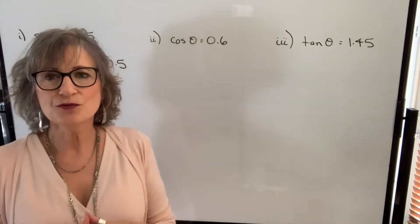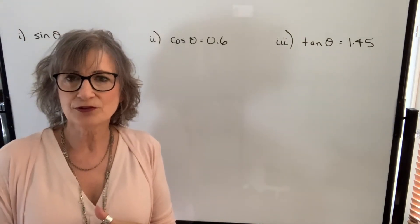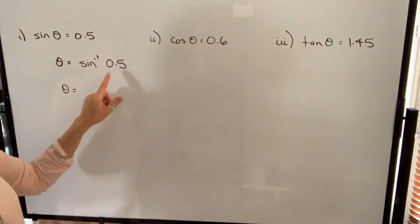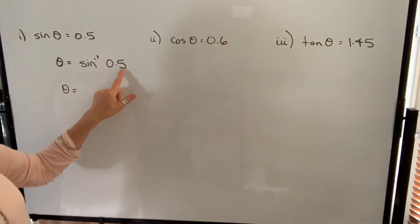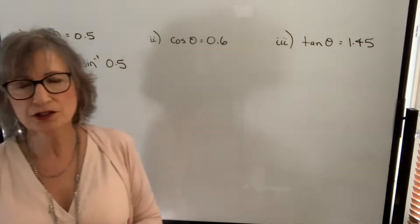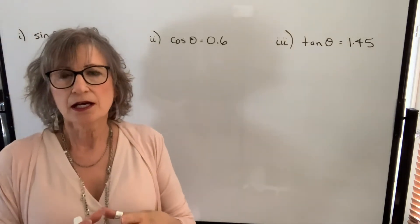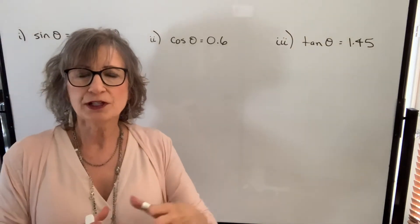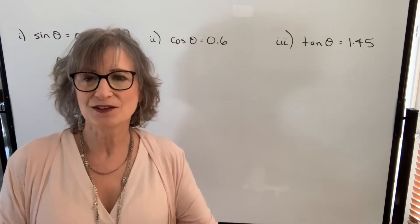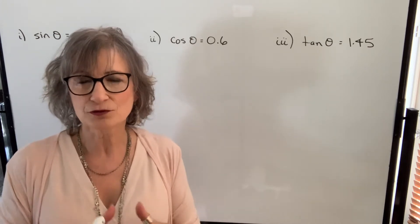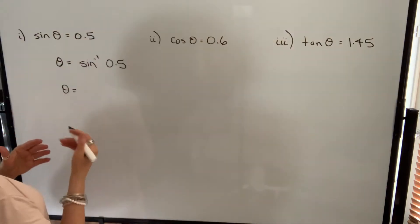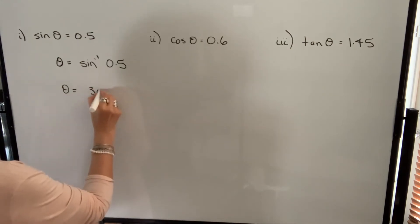That's true for variables, but when you're dealing with functions and you see a negative one exponent, it does not mean one over sine. For those of you with the Texas Instrument XA30, you're going to enter 0.5 and then press your inverse sine function. For different calculators, you might have to press the inverse sine function first, and then 0.5. Try it on your calculator — you should get a value of 30 degrees.